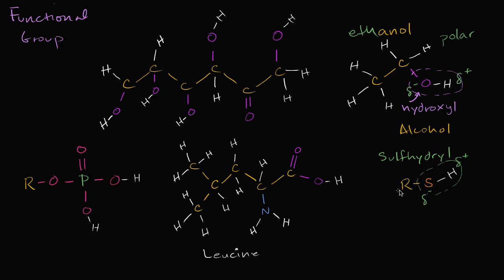When you have a sulfhydryl group attached to a carbon chain, the R notation I use here is just shorthand for carbon and a bunch of other stuff. For example, if I wanted to generalize an alcohol, I could write R bonded to a hydroxyl group — O then H. The R would be shorthand for the rest of the carbon backbone. So when you see a sulfhydryl group like this, it's still going to be polar, but not quite as polar as a hydroxyl group.